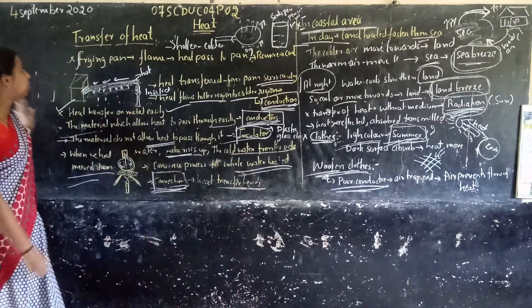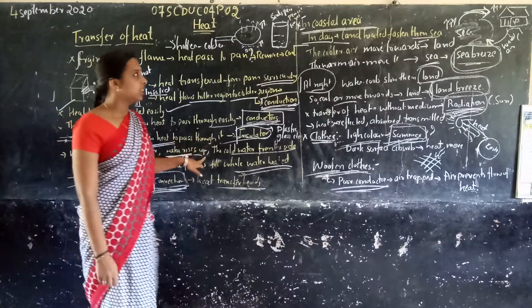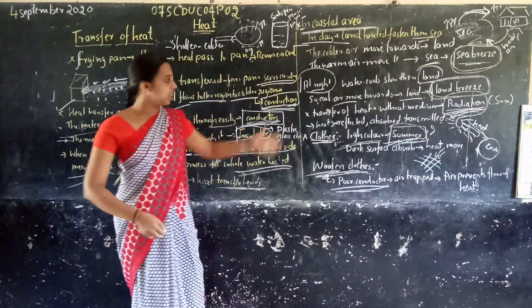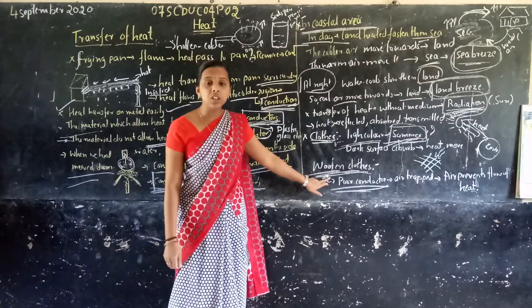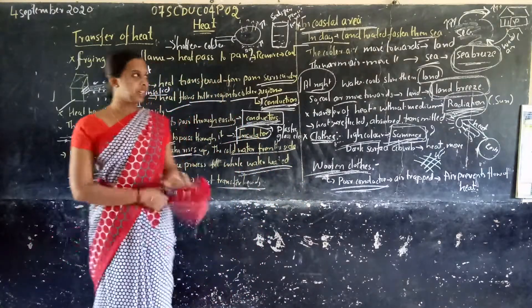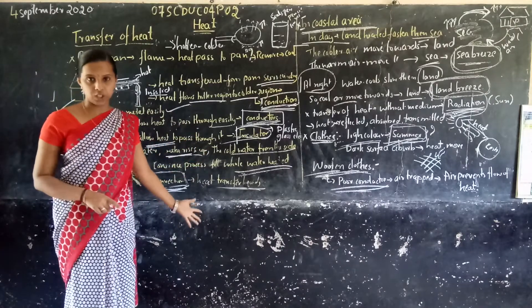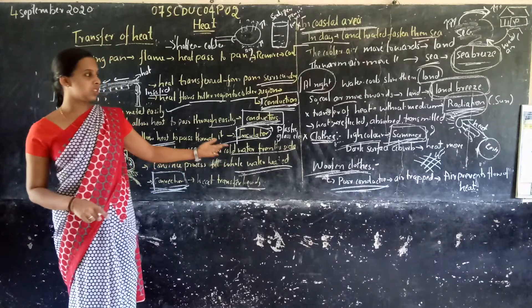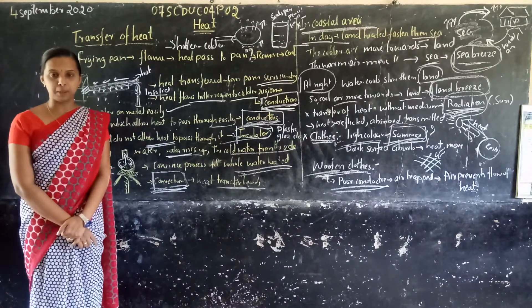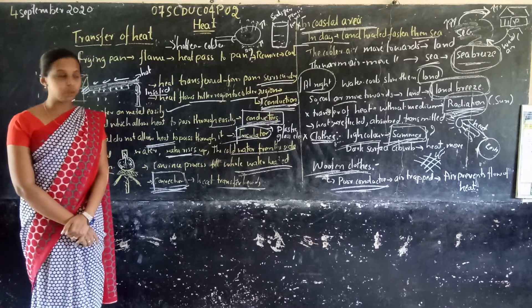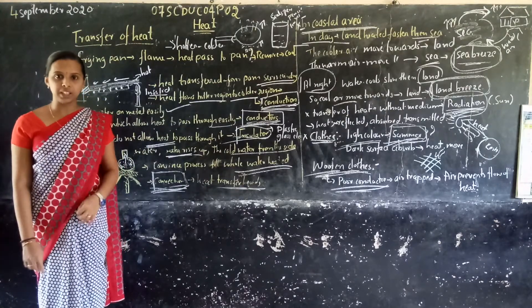In this class, we studied how transfer of heat takes place, what are conductors, what is conduction, how heat transfer occurs in coastal areas, what type of clothes we use in summer and winter, and why we use woolen clothes in winter. We also covered what is heat, types of thermometers, temperature, conductors, insulators, conduction, and radiation. I will end this class. In the next class, we study the next topic and chapter. Open your textbook and review. I will give notes later. If you have any doubt, call me. Thank you.